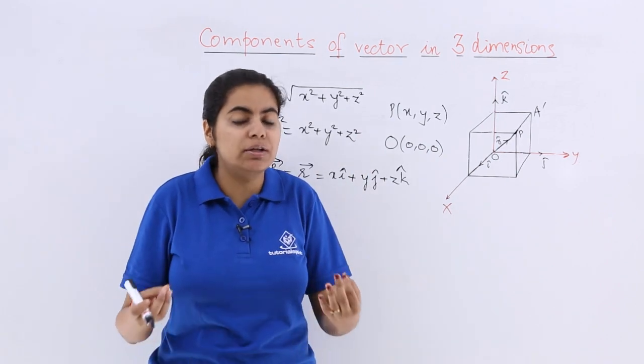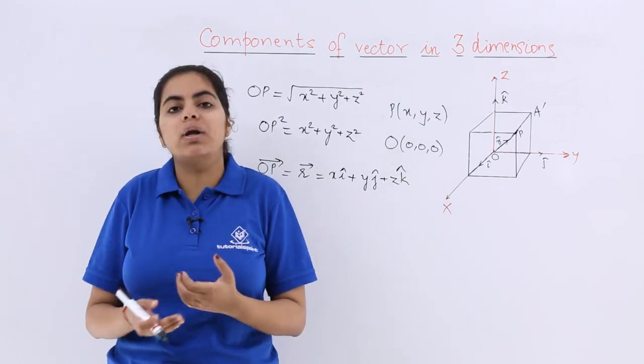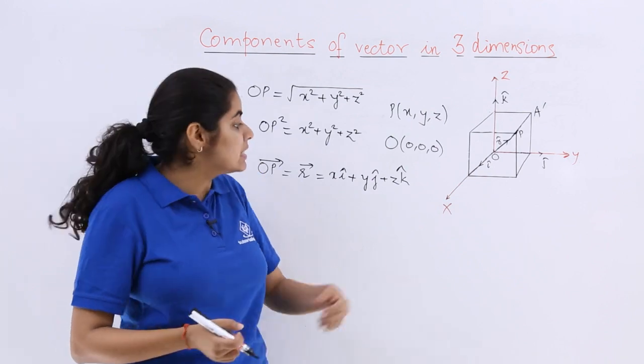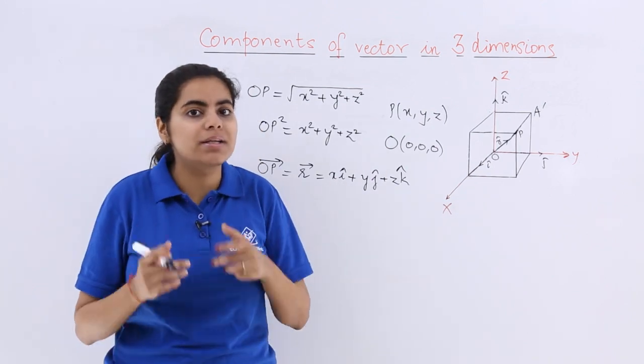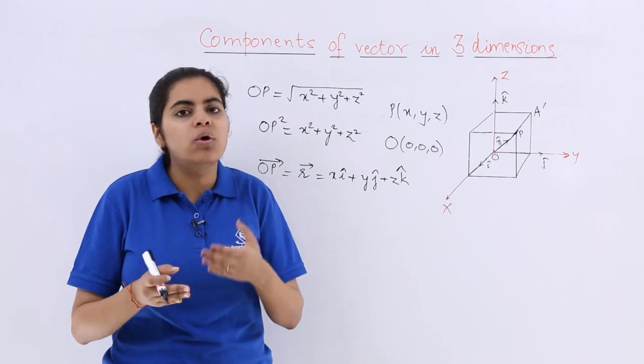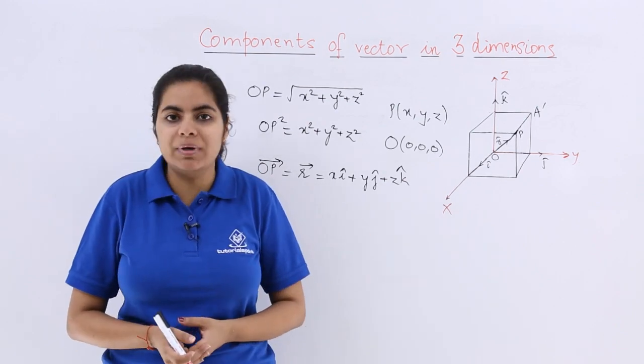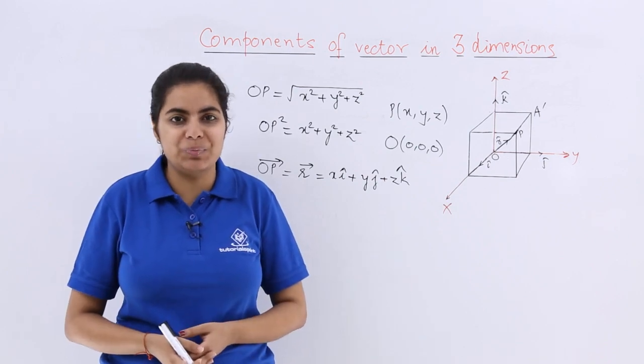So what is the component if I ask you along the x axis? It is x i cap. What is the component along the z axis? It is z k cap. What is the component along the y axis? It is y j cap. And now when we want to study more about this, we will be studying the properties based on this and then the numerical problems.